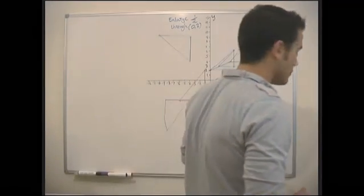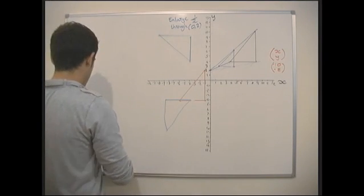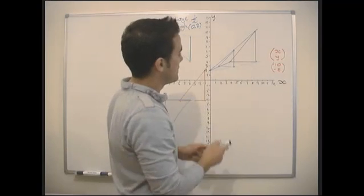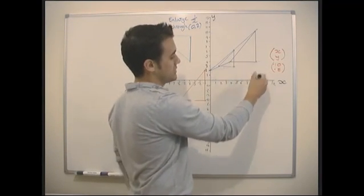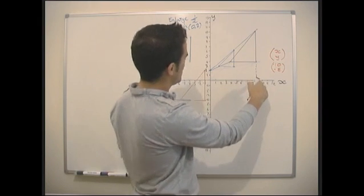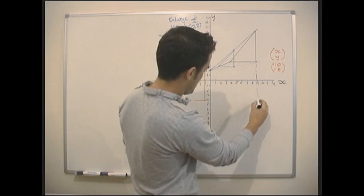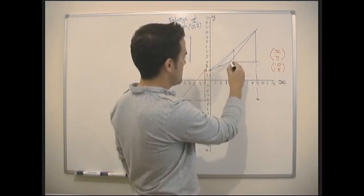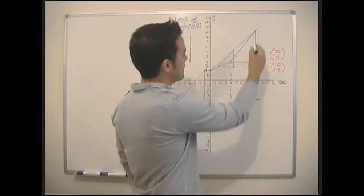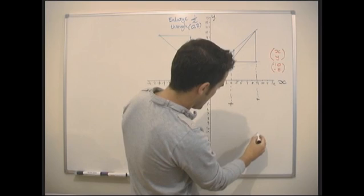The last transformation is reflection. Let's reflect this in the x-axis. It's just like a mirror, so each point is equidistant from the axis. A point four above the x-axis goes to four below, another point four above goes to four below, and a point ten above goes to ten below.